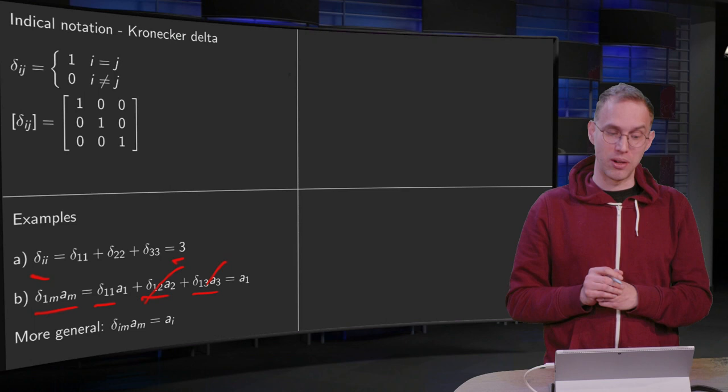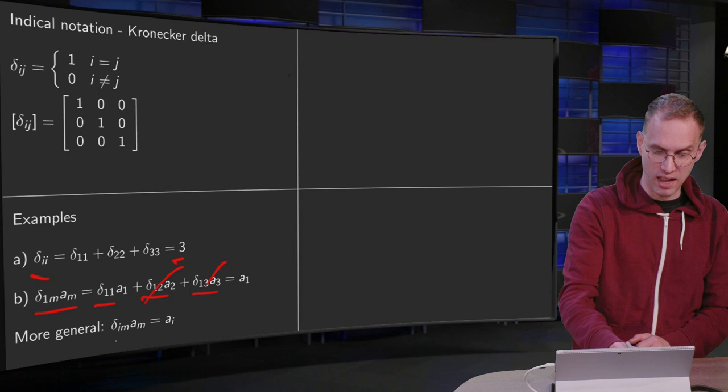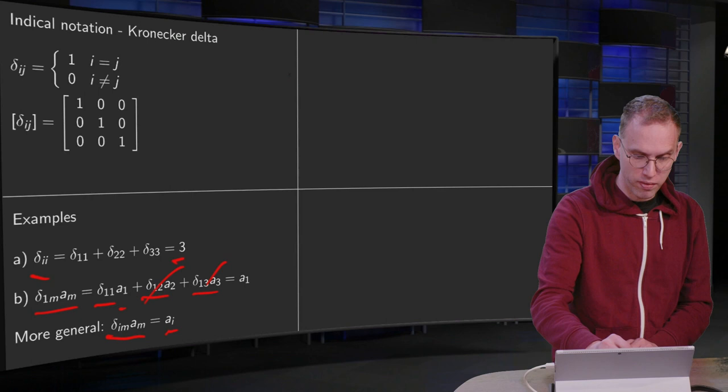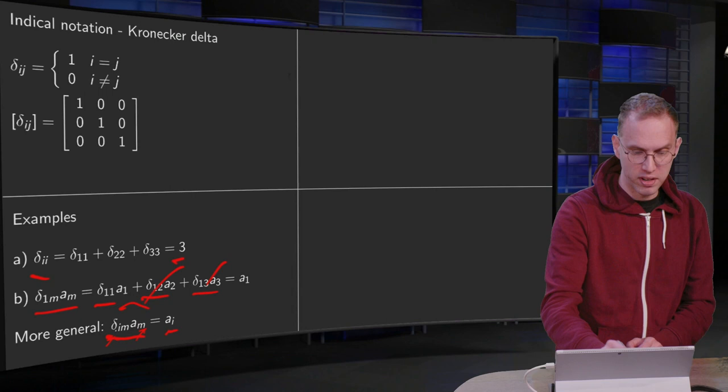More generally, if you're having not delta 1m·am but delta im·am, you're going to pick out the ith component of ai. So a sum like this, you're basically summing over m—you replace the m of the a over here by the i over there. That's what effectively happens: you select a certain component.